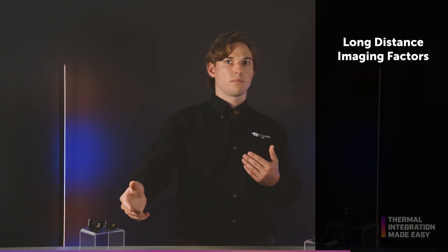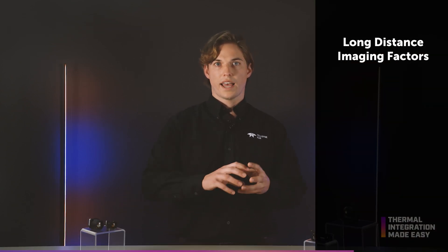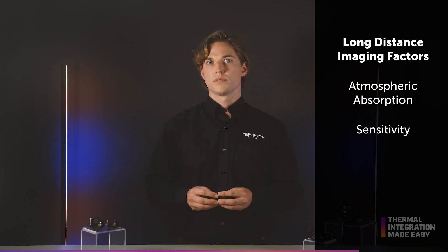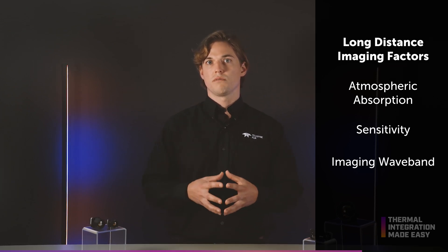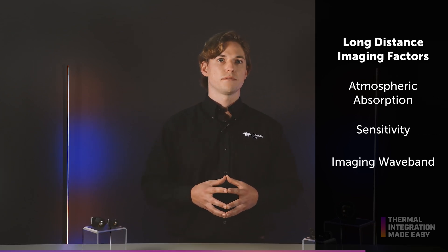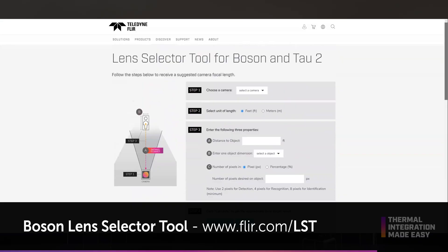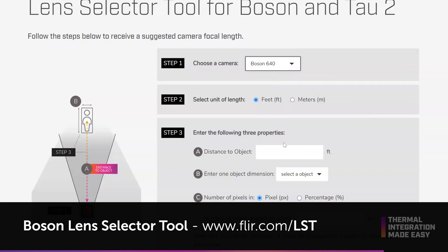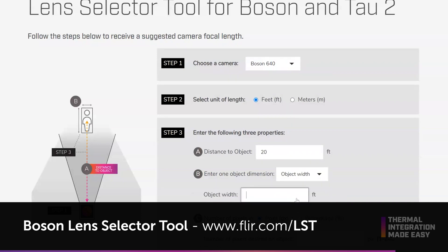While these recommended standards can be used as a guideline, each application and environment will have a unique set of requirements. For long distance imaging applications, factors such as atmospheric absorption, sensitivity, and imaging wave band become very important to calculating DRI. The Boson Lens Selector tool helps you calculate which focal length would be best suited for your application. The tool can be found at flir.com/LST, and once it makes a recommendation, our team of experts can ensure you're equipped with the right camera for your next application.